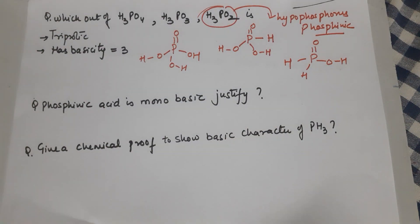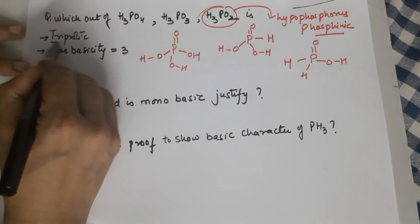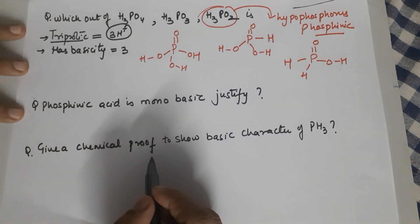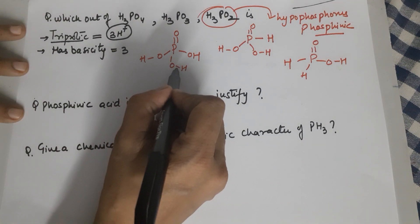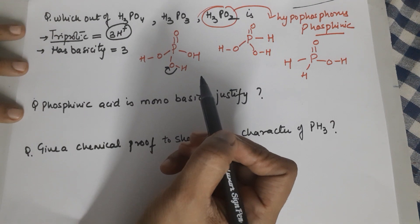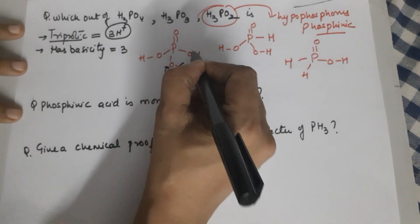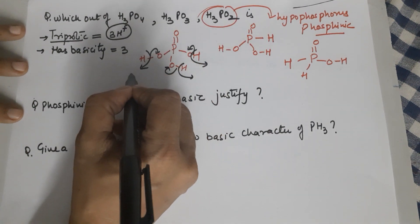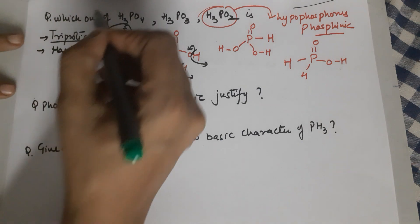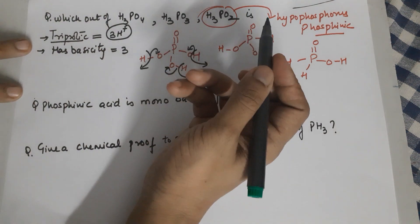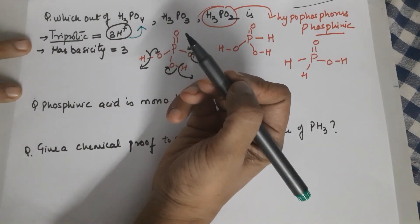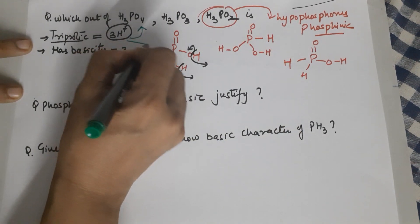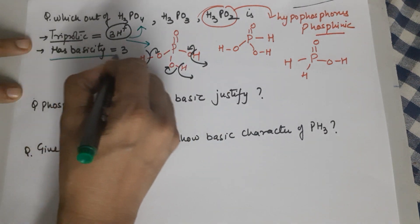Once you know the structures, we need to know which out of them is triprotic. Triprotic means it should be capable of giving you 3 H⁺. H⁺ can only be formed when hydrogen is bonded to a highly electronegative atom like oxygen. Hence the answer for the triprotic phosphorus acid is orthophosphoric acid (H₃PO₄), which has a basicity of 3.